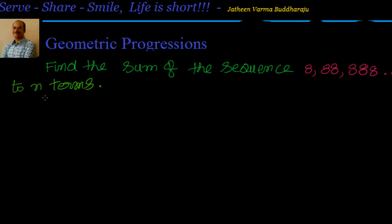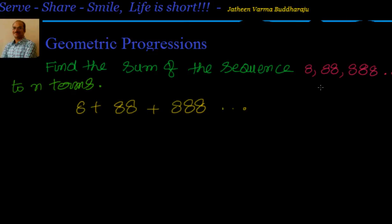Find the sum of sequence to n terms where you have 8, 88, 888 and so on. The series looks like 8 plus 88 plus 888 continuing. Whenever you have problems like this — instead of 8 it can be 5, like 4 plus 44 plus 444, or 5 plus 55 plus 555.